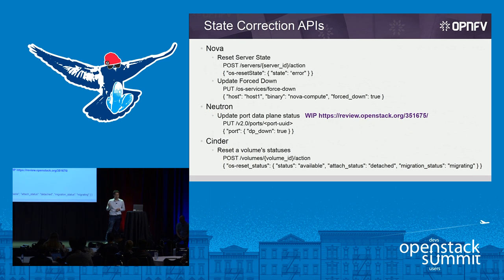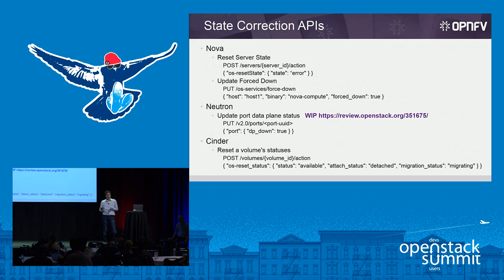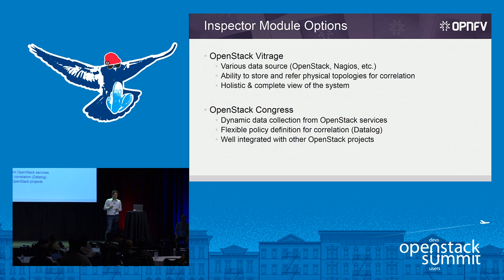Here are more details about the APIs. Nova has a reset server status with a POST URL, and it also has the force-down API for the Nova compute services. Neutron — Carlos and one of MicroZ's team — are proposing a new API to present the availability of the port to the user. And Cinder already has its reset API to set various statuses of volumes. So let's look at the two inspector modules: Vitrage and Congress. They have different characteristics.